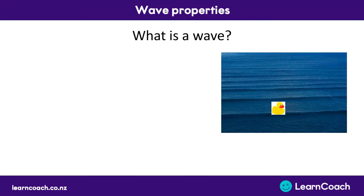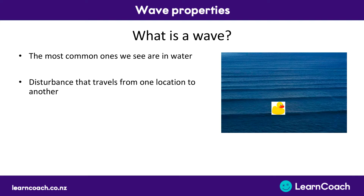To start off with, we've got to think about what exactly a wave is. The most common waves we see are the ones in water. A wave can be thought of as a disturbance that can travel from one location to another. In this example, the waves are on the ocean, and there's a rubber duck sitting on one of the waves. We can see that the waves travel from one location to the other — in this case, they're travelling towards us.